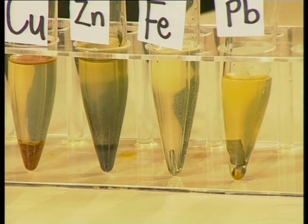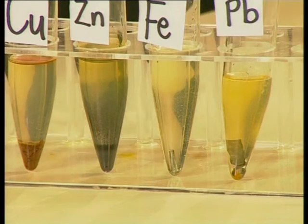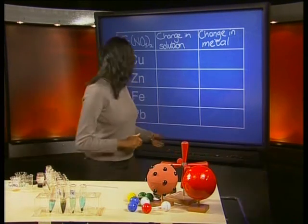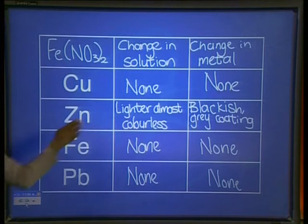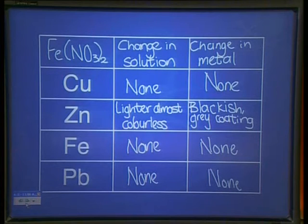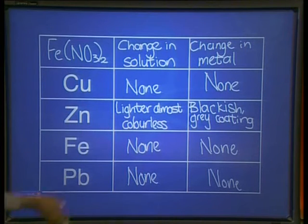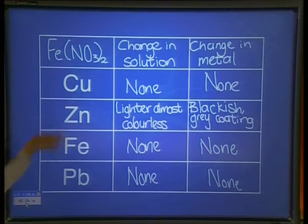The last test tube also shows no sign of change. Once again, we need to note our observations in a table. Our results show that only zinc has displaced iron from its solution. That means that the zinc reacted, pushing the iron out of the solution to form a zinc solution. The iron is deposited in a solid form. This can only happen if zinc is more reactive than iron. Because lead and copper could not displace the iron, we can say that lead and copper are both less reactive than iron.